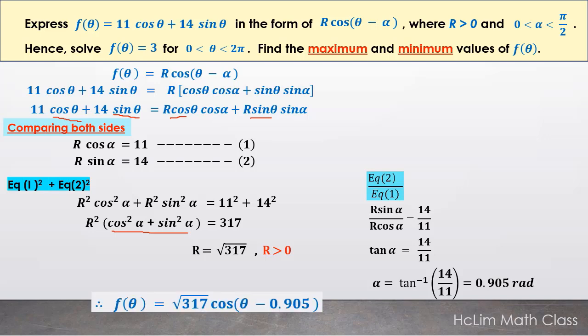After that, we substitute f(θ) and transform it into the form √317 cos(θ - 0.905).